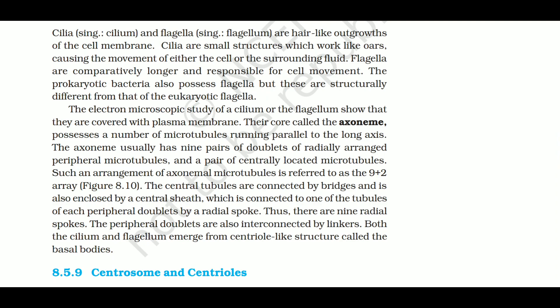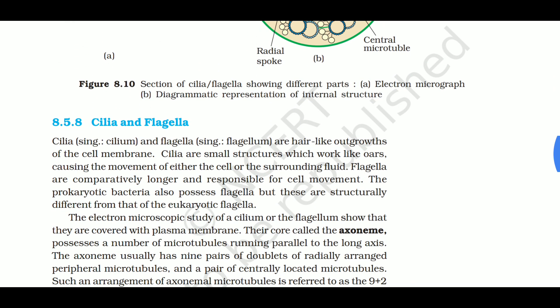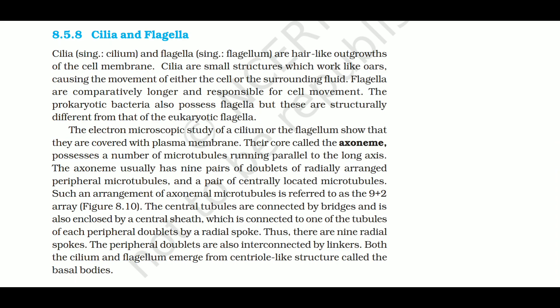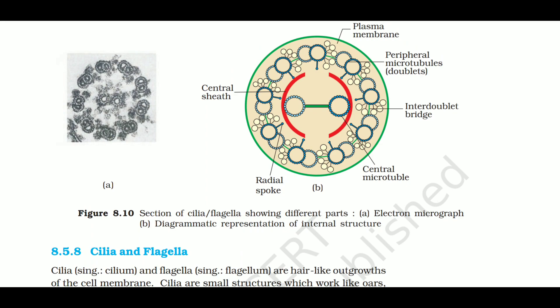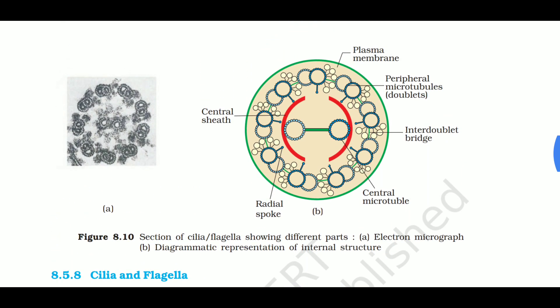The axoneme possesses a number of microtubules running parallel to the long axis. It usually has nine pairs of doublets of radially arranged peripheral tubules - a total of nine pairs. Located centrally is a pair of centrally located microtubules. This arrangement is referred to as the '9+2 array' - nine doublets peripherally and two singlets centrally. Important: the center has singlets, not doublets.